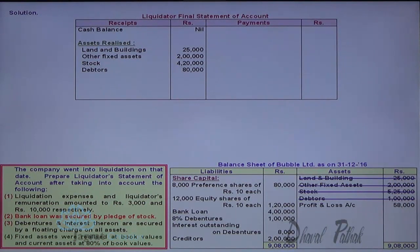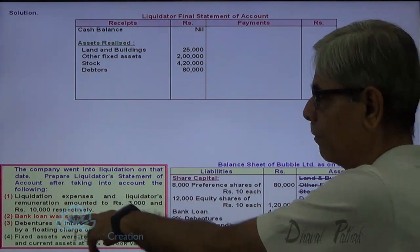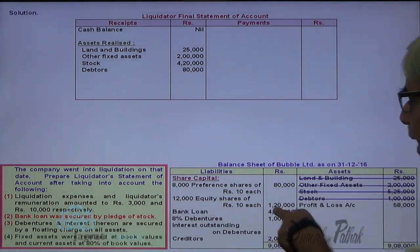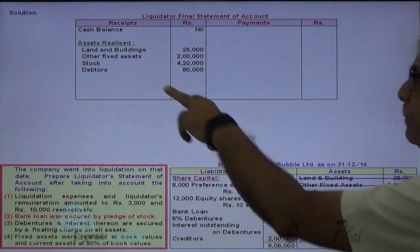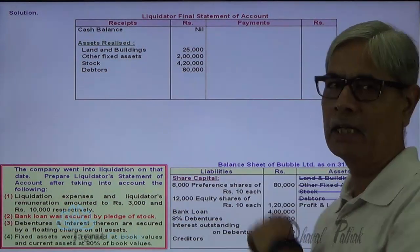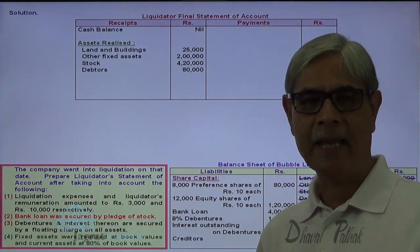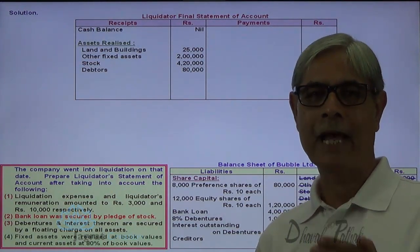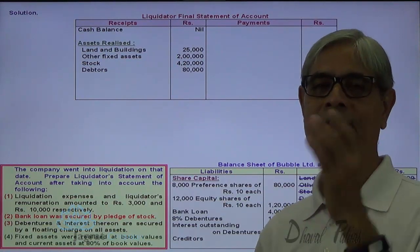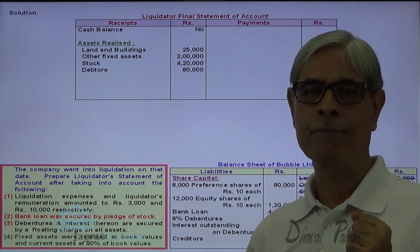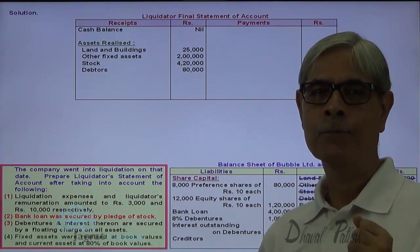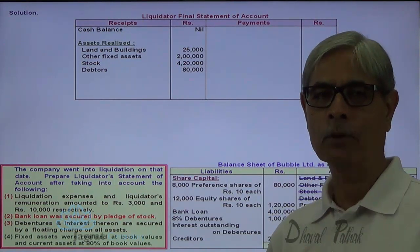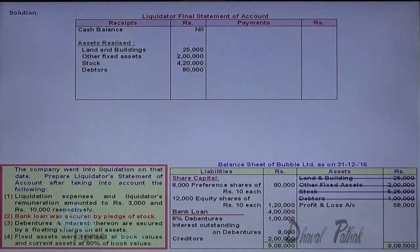Now the first payment is to be made for the bank loan. Bank loan is 4 lakhs; stock realized 4 lakhs 20,000. So bank loan is fully secured because the amount of liability is less than the proceeds of the asset being pledged or hypothecated. So 4 lakhs is paid to fully secured creditors.